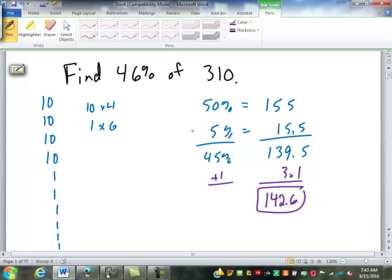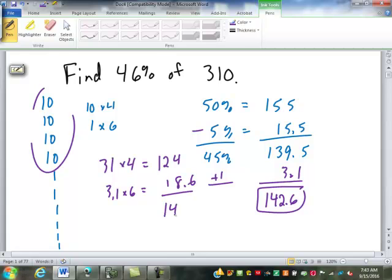Now I'm not saying you had to do it that way. This way works fine too. To find your 10% 31 times 4, and 1%, which is 3.1, times 6. You get 124 and you get 18.6. It does come out to 142.6. Either way. So either way is fine. There's all sorts of ways you can break this down. And it all depends on how your mind works.